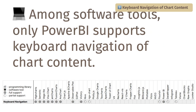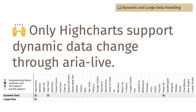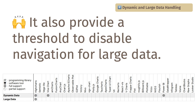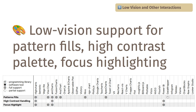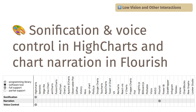Among software tools, only PowerBI supported the keyboard navigation of chart content. HighCharts was the only tool to proactively announce dynamic data changes, and it also provides a threshold option to disable navigation when data is too large. Some tools offered low vision support, such as patterned fills, high contrast palettes, and focus point highlighting, but these features were not widely supported. HighCharts is the only tool to support sonification and voice control, while Flourish offers voice narration over the chart.